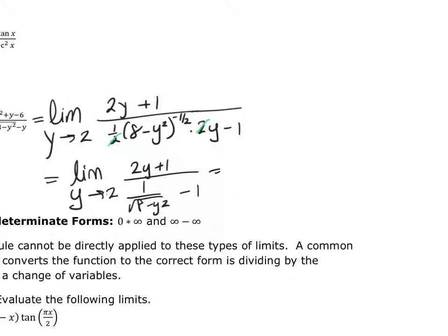If I put 2 in the numerator, I get 2 times 2 plus 1. Then I put 2 in the denominator, I get 1 over the square root of 8 minus 4 minus 1. I can see that this is good to go in terms of the limit — I don't have to do anything further.